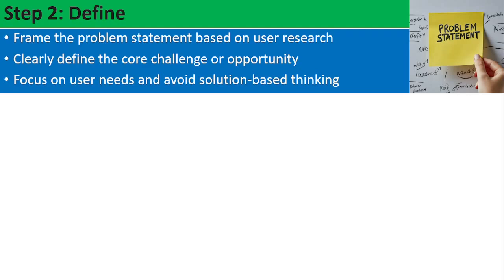The second step is Define. After understanding your problem, you frame a problem statement using the 'How Might We' formula. Based on the user research, you frame the problem statement using the 'How Might We' format. After writing the problem statement, you clearly define the core challenges and opportunities available for solving the problem.